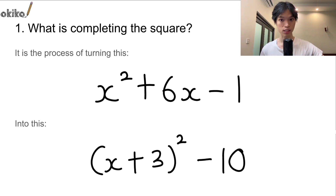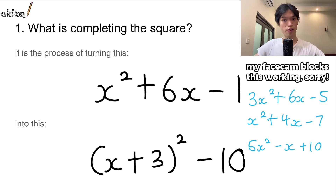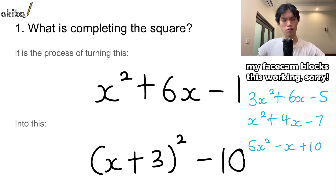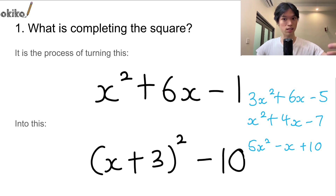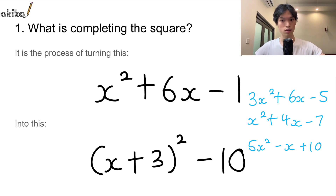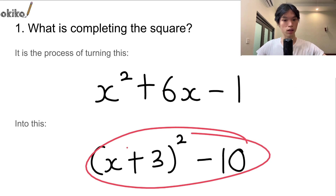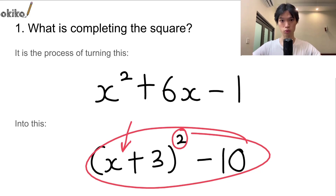You're going to see plenty of these expressions. For example: 3x squared plus 6x minus 5, x squared plus 4x minus 7, 5x squared minus x plus 10. All sorts of expressions like these, which we call quadratics — you can apply completing the square to pretty much any one of them. You're just turning this expression into one where you have that bracket, and the bracket is the thing that's being squared instead of the x.